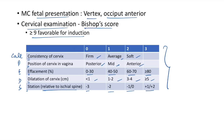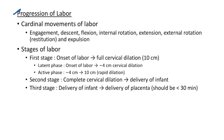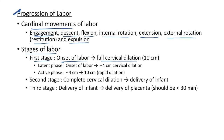Cardinal movements of labor: engagement, descent, flexion, internal rotation, extension, external rotation (restitution), and expulsion. Stages of labor: first stage — onset of labor to full cervical dilatation (10 cm), with latent phase (onset to ~4 cm) and active phase (4 to 10 cm, rapid dilatation). Second stage — complete cervical dilatation to delivery of infant. Third stage — delivery of infant to delivery of placenta; should be less than 30 minutes.